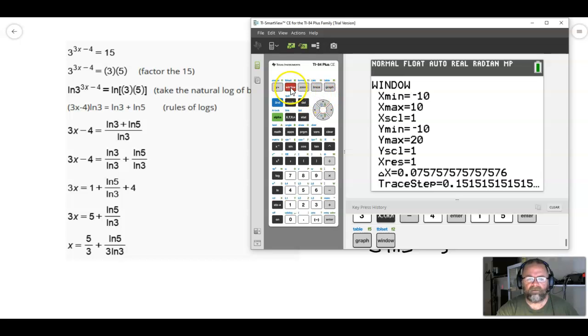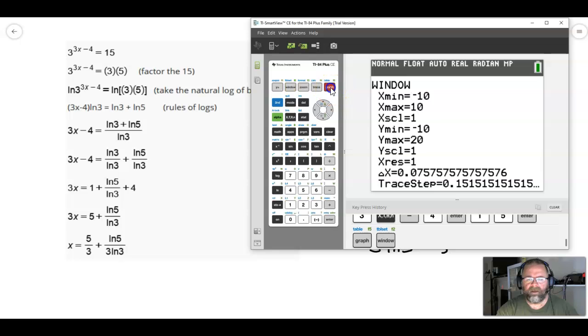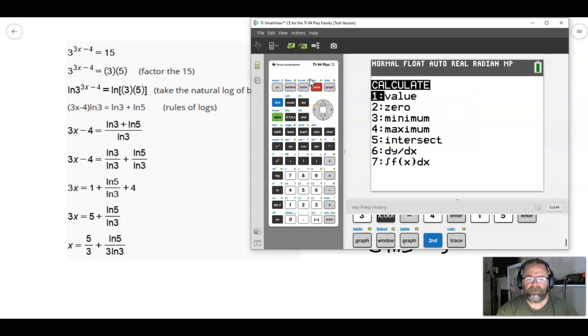But if I hadn't done that already, you could go to your window and just kind of change the window around. Now, the idea here is that we need to see where the intersection occurs. And the intersection here is actually going to be the solution to this problem. So, how do you find the intersection? Well, you could hit second trace, which is the calculate, and you go down to intersect, hit enter.